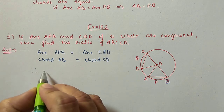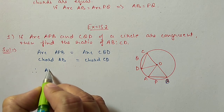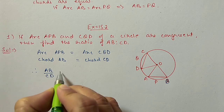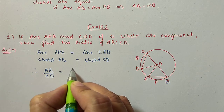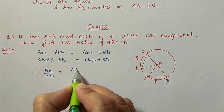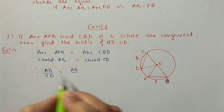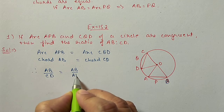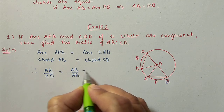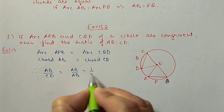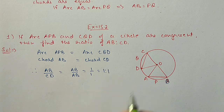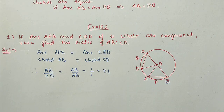Therefore, AB divided by CD — because AB and CD are equal, we can replace CD with AB — and we will get 1 by 1. So their ratio will be 1 is to 1.